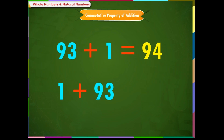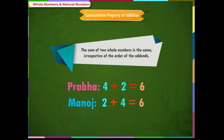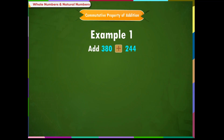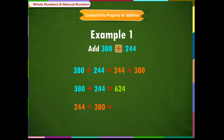Thus, Prabha and Manoj both have put the same number of wallpaper pieces. Let us take an example. Add 380 plus 244. Using commutative property, we can write 380 plus 244 is equal to 244 plus 380. Both equal 624. So we can conclude that even if we change the order of the addends, the sum remains the same.